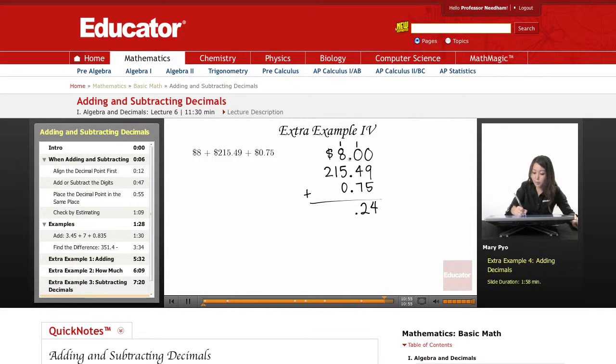Bring down the decimal point. Come straight down. And then 1 plus 8 is 9, plus 5 is 14.